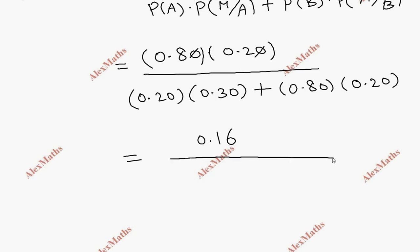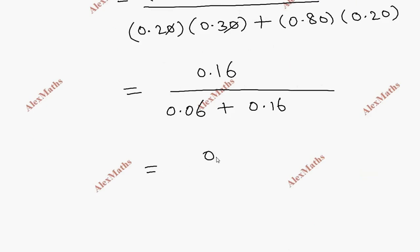So 0.16 divided by 0.06 plus 0.16. The numerator is 0.16, denominator is 0.22. After division, the answer is 0.727 or approximately 0.73.